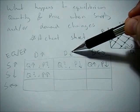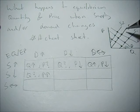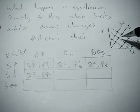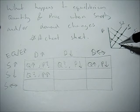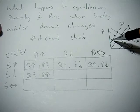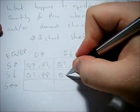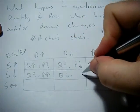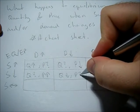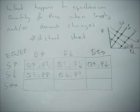Now what if demand decreases and supply decreases? Supply decreases from this line to this line, and demand decreases from this line to this line, so we end up at a new equilibrium. We know for sure that equilibrium quantity is going to drop, but we don't quite know what's going to happen to price — it could go up, down, or stay the same.